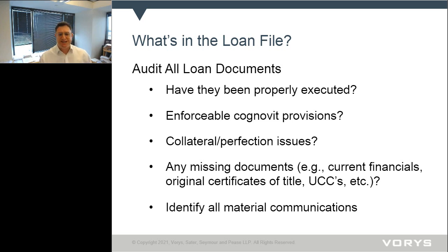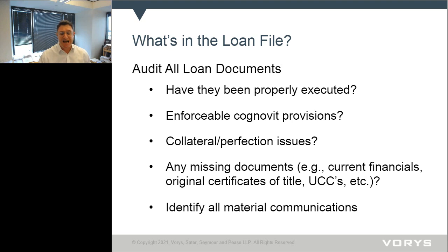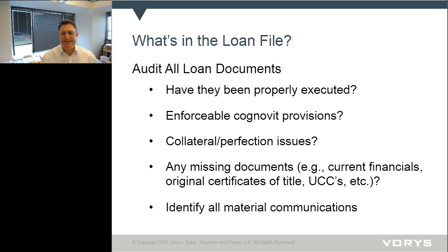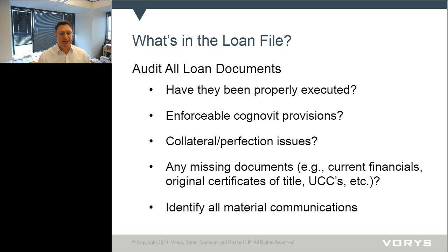The next issue is collateral and perfection. The more complicated the credit, the more vulnerable it is to having perfection or security agreements not written properly and thus vulnerable to attack. You want to make sure your UCCs properly identify your collateral. A common problem we've seen is where the loan agreement includes all assets but the UCC covers just equipment, or vice versa. This is an opportunity to look at your documents and make sure all the collateral you believe should be included is there.